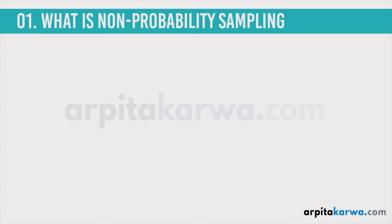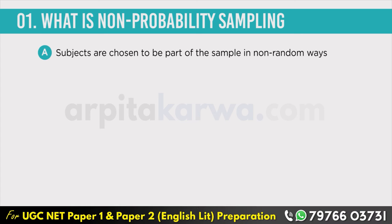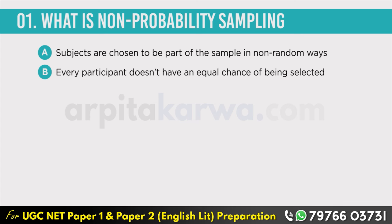Non-probability sampling is a kind of sampling where subjects are chosen to be a part of the sample in non-random ways. In case of probability sampling the subjects were chosen randomly. In case of non-probability sampling subjects are chosen in non-random ways. Mostly when you are doing an experiment or research you would be required to choose a sample using probability sampling method because in probability sampling every participant has an equal chance of being selected.